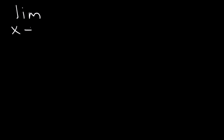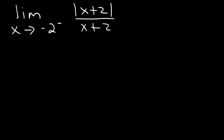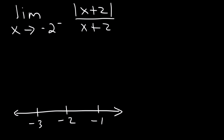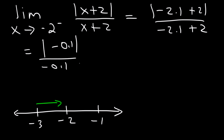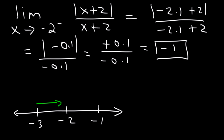What about the limit as x approaches negative 2 from the left of the absolute value of x plus 2 divided by x plus 2? Let's make a number line: here's negative 2, negative 3, and negative 1. From the left side we need a number between negative 3 and negative 2, close to negative 2 — so let's use negative 2.1. The absolute value of negative 2.1 plus 2 divided by negative 2.1 plus 2 gives positive 0.1 divided by negative 0.1, which equals negative 1. So that's the answer.